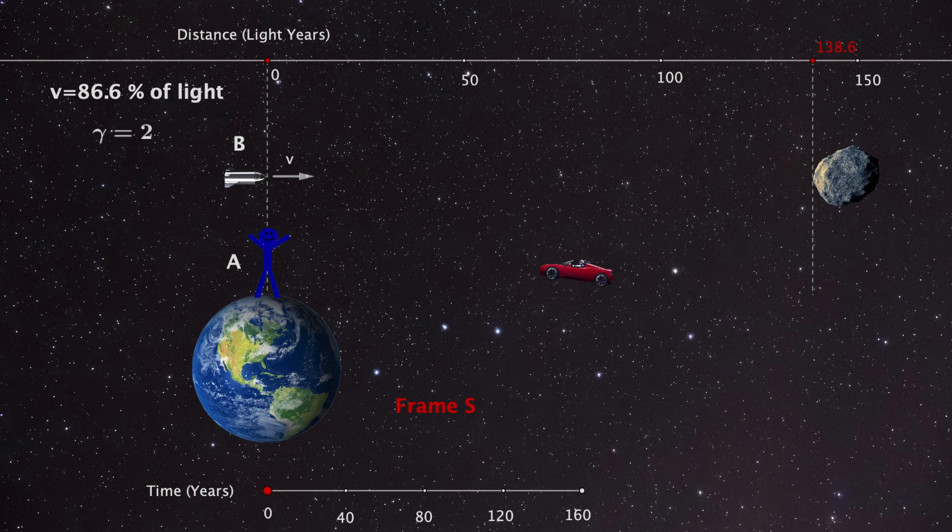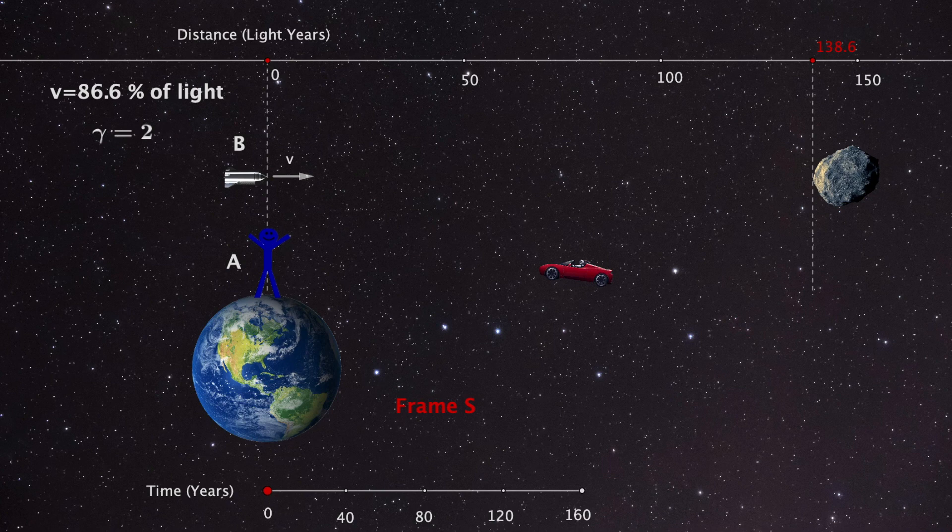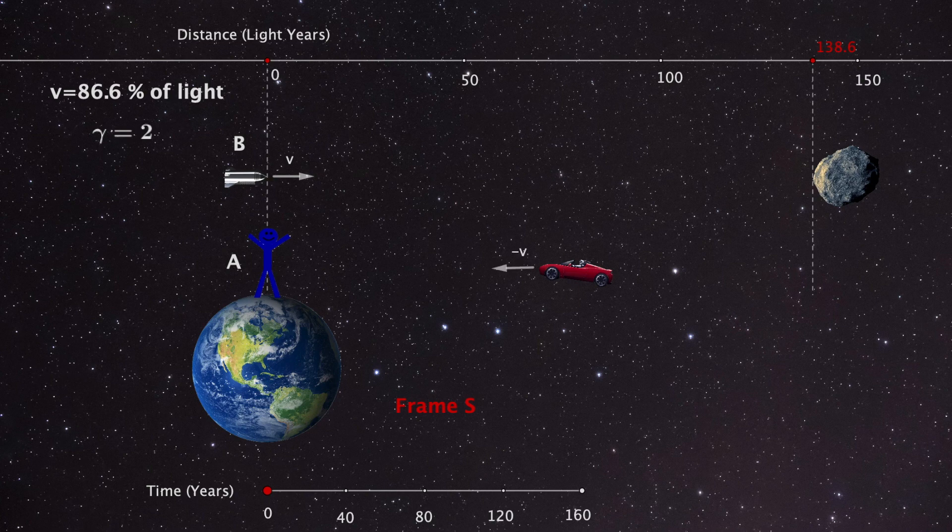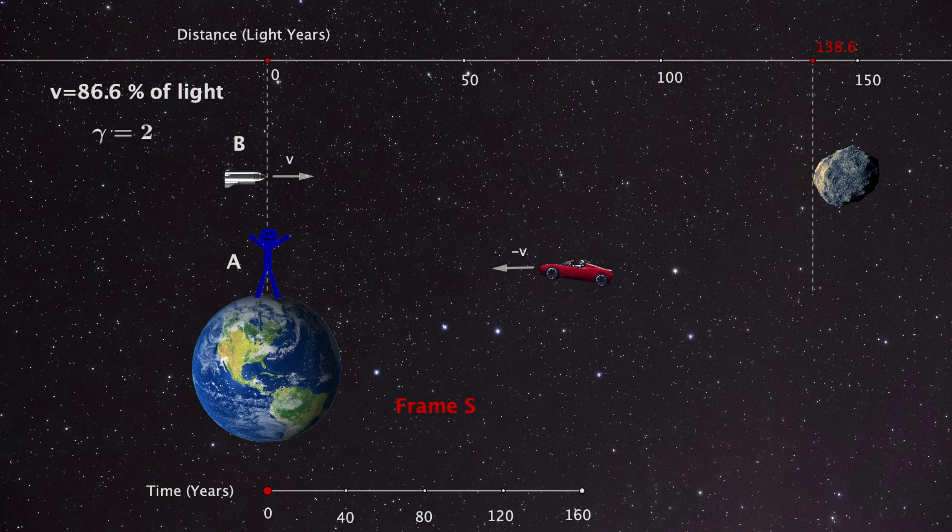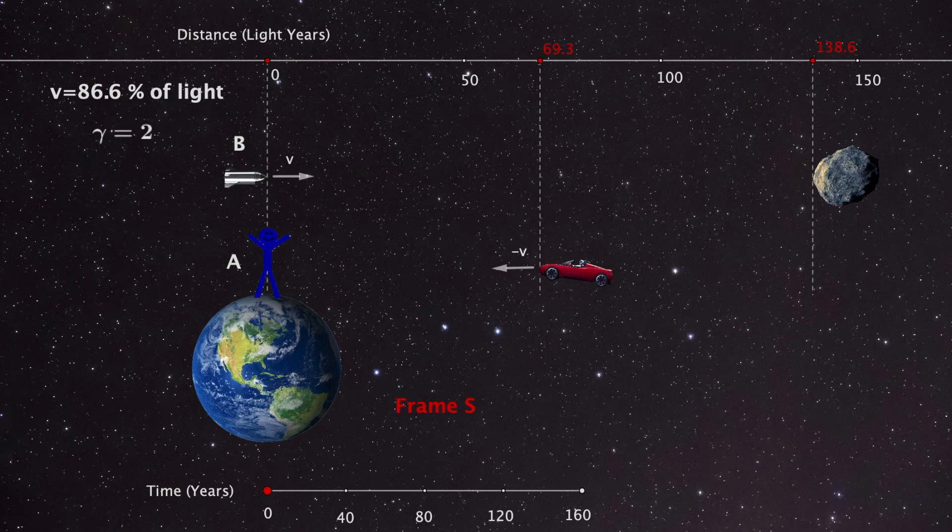Observer A also lives happily till his 80th birthday and is then killed in a very unfortunate event. A Tesla Roadster from deep space penetrates Earth's atmosphere and lands right on his birthday table. For simplicity, let's say that the Roadster flies at the same velocity as the starship but in negative x direction. From the perspective of Earth, Observer A lived 80 years. And therefore, the Roadster must have been located 69.3 light years from Earth the day he was born.